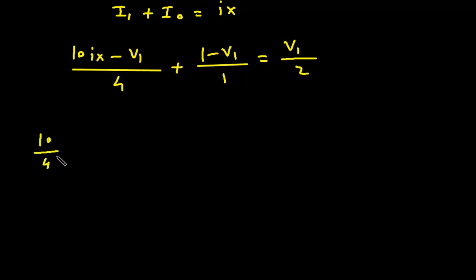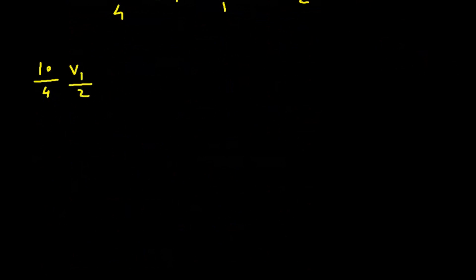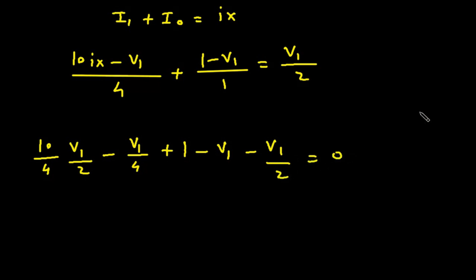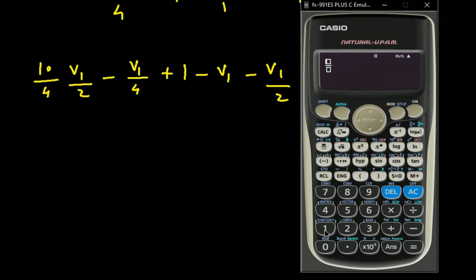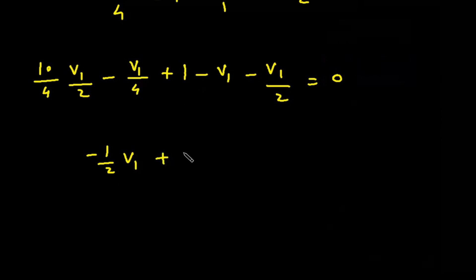Substituting IX into the equation: (10/4)·(V1/2) minus V1/4 plus 1/1 minus V1 minus V1/2 equals 0. Simplifying: (10/4)·(1/2) gives 10 by 8, minus 1/4, then minus 1, minus 1/2, all multiplied by V1, plus 1 equals 0.